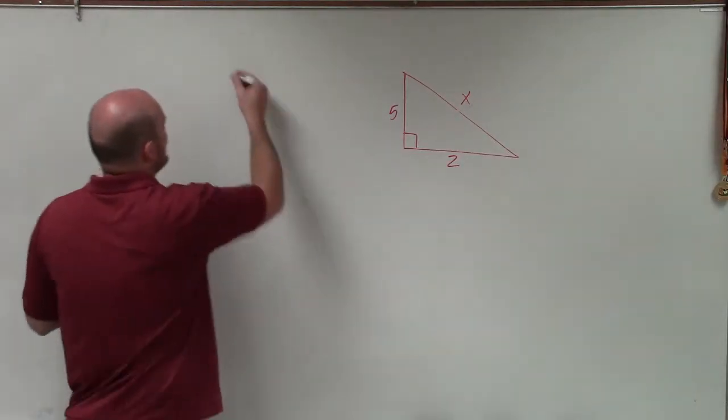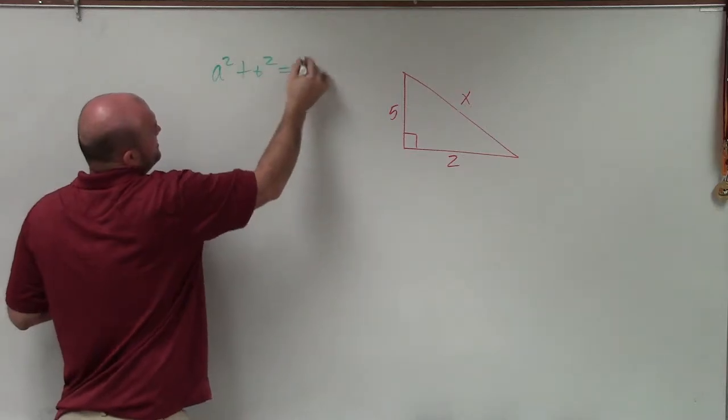Now, a lot of times people say, Pythagorean theorem: a squared plus b squared equals c squared. Very obvious.